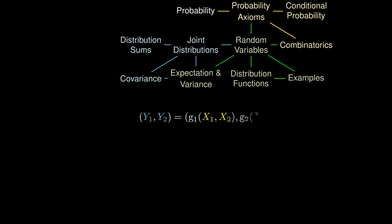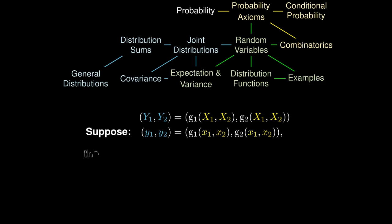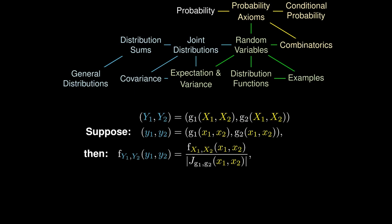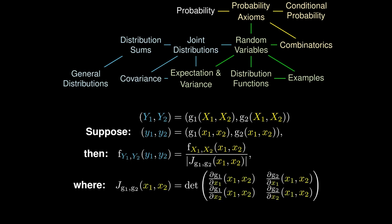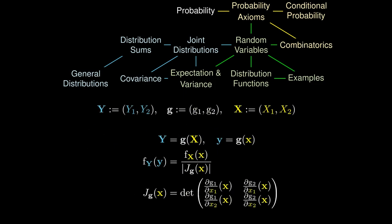Suppose we have the two-dimensional random variable (Y1, Y2) in terms of the two-dimensional random variable (X1, X2). Remarkably, we can find the distribution of (Y1, Y2) in terms of the distribution of (X1, X2) — we divide by the magnitude of the Jacobian of the two-dimensional function (G1, G2). This Jacobian is defined by the determinant of a matrix where each term is a derivative of one of the functions with respect to one of the variables. We can simplify this using vector notation, which looks similar to the one-dimensional case.